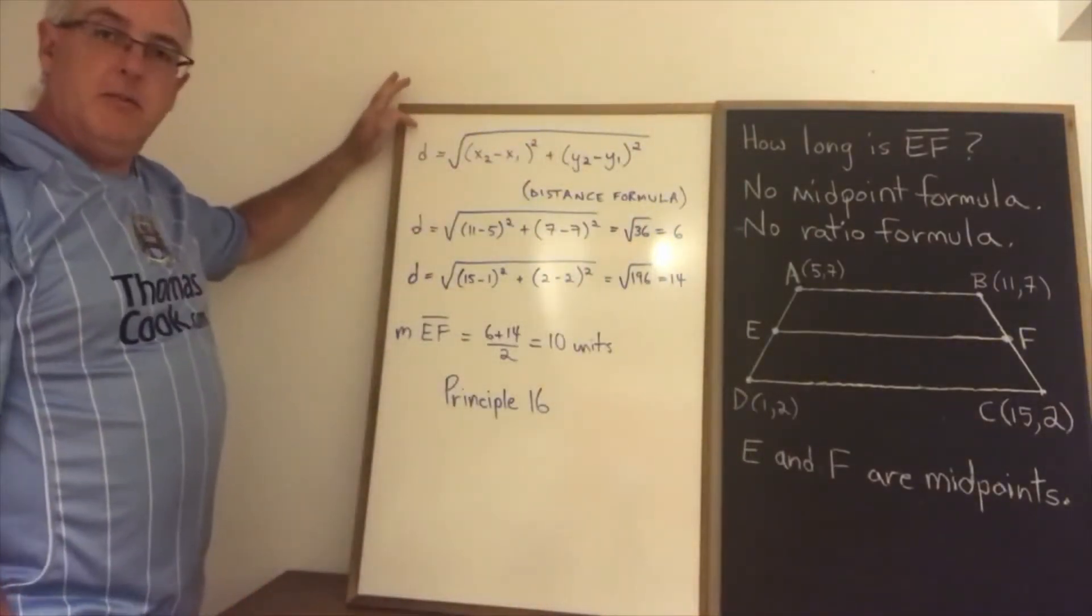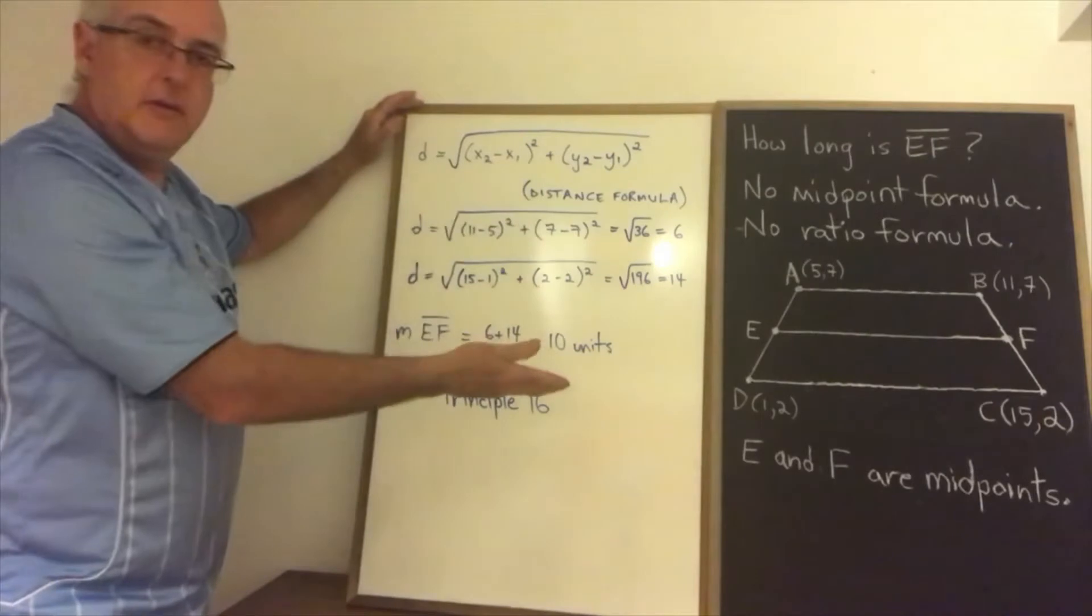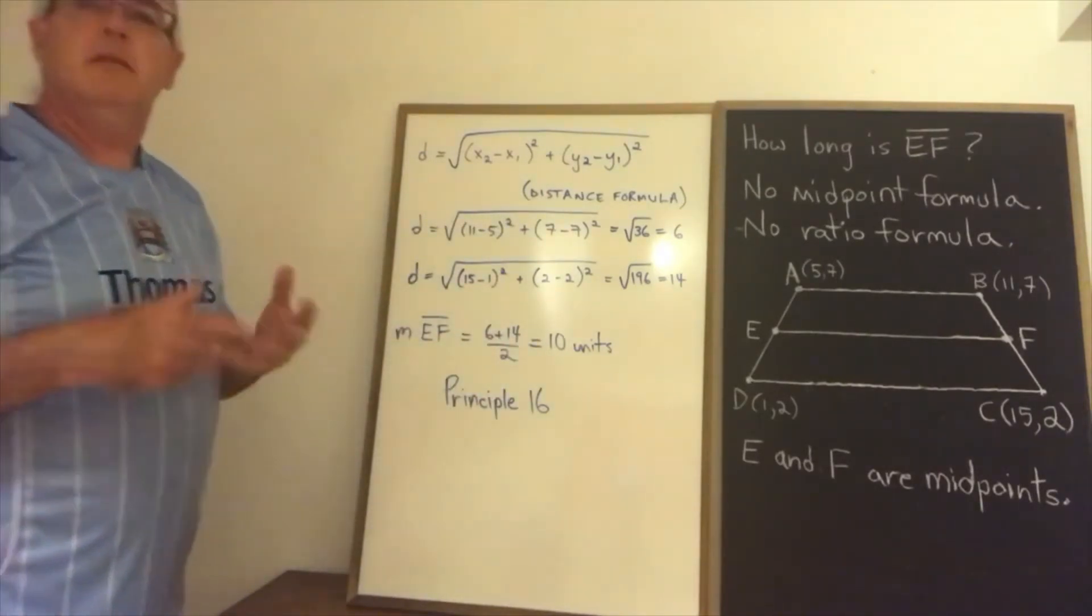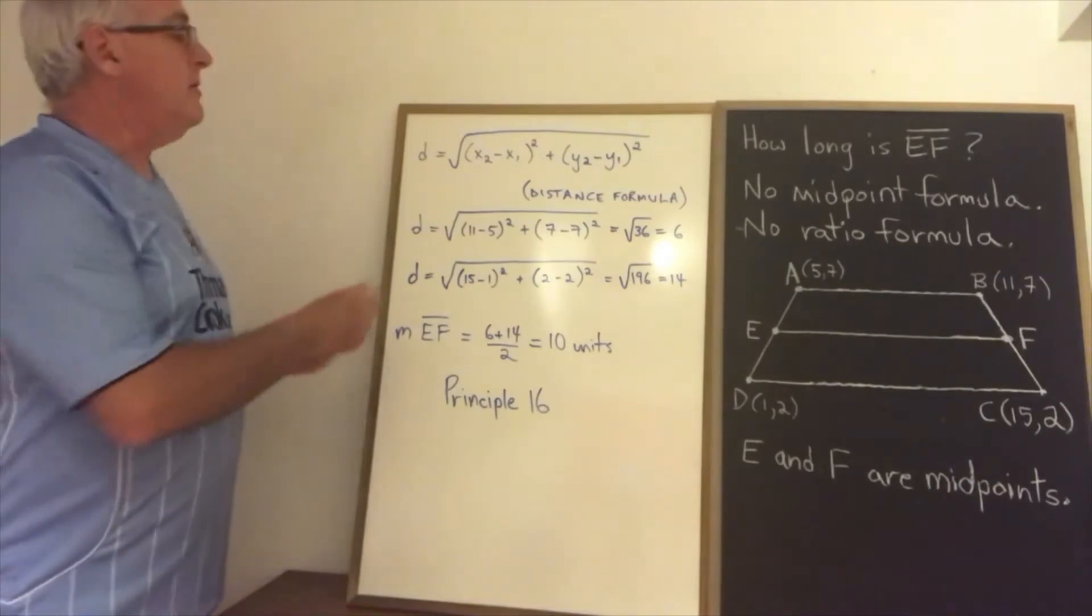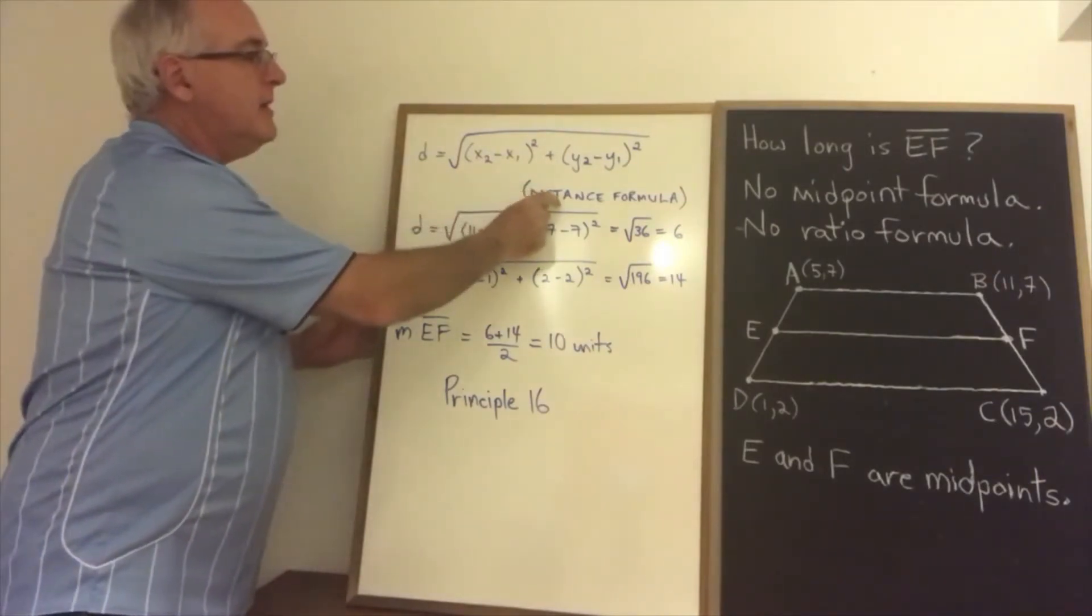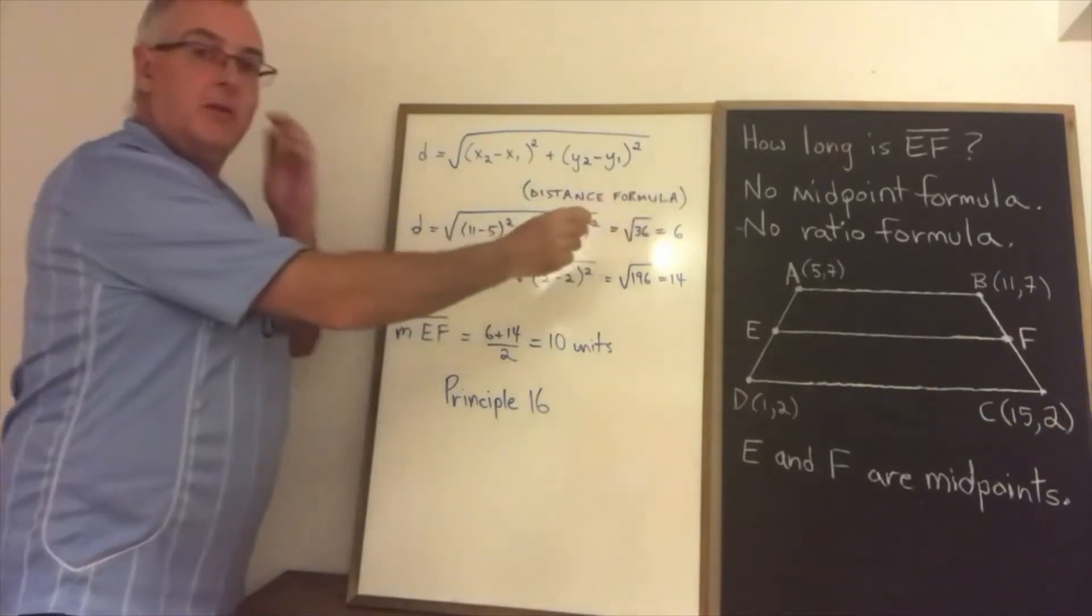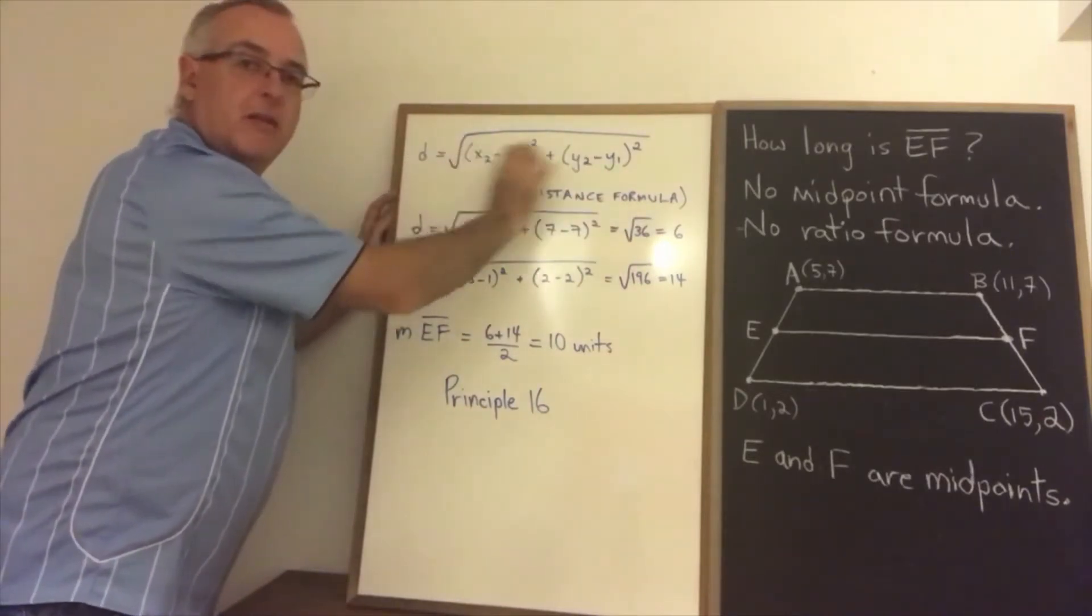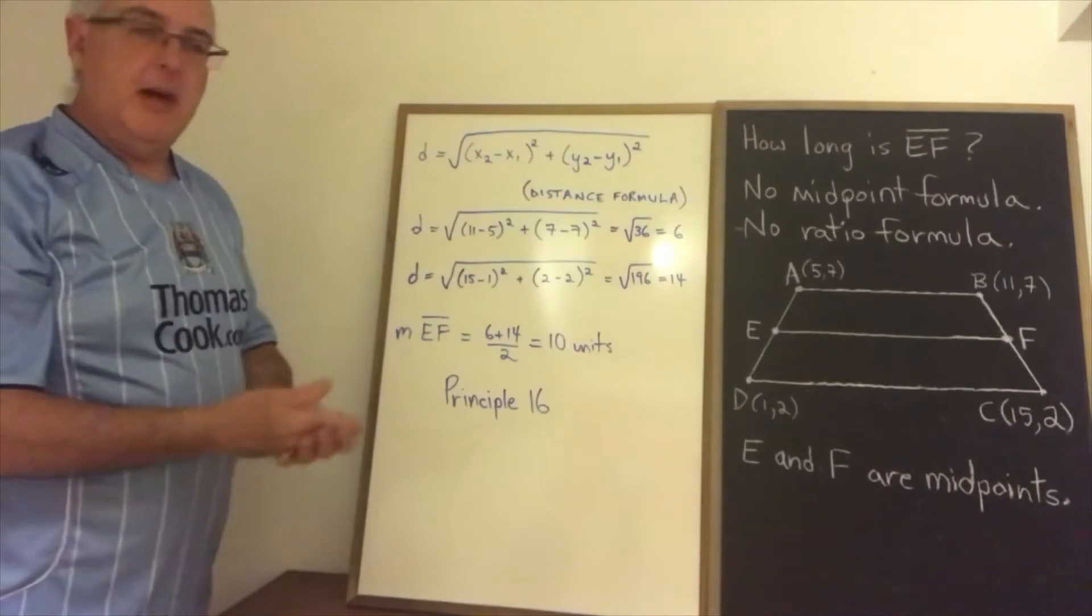I start with the distance formula and I say distance formula. I'm justifying the math that I'm about to do by saying which formula I'm going to use. If a student doesn't write the phrase distance formula but they have written this distance formula with none of the values filled in, I also accept that as justification.